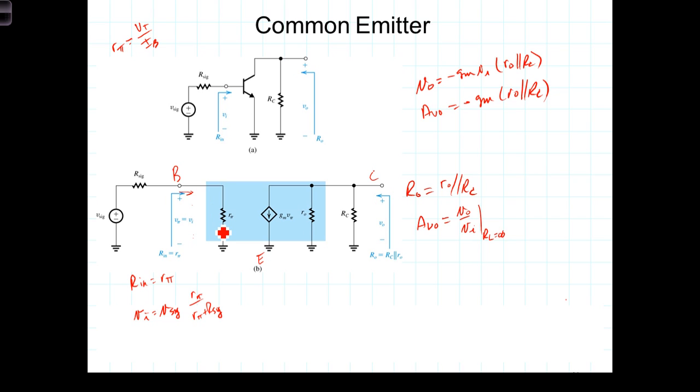The second observation is that R out, which is the parallel combination of R0 and Rc, is to a large extent dependent upon Rc, the collector resistance. Generally speaking, R0 is relatively large, and R sub C will dominate the output resistance.